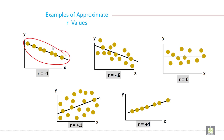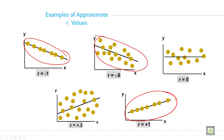Looking at approximate r values: if r is minus 1, all dots should be on the line going downward. If r is plus 1, all dots should be on the line going upward. If r is negative, it goes downward and the dots are far from the line. If r is positive, it goes upward and the dots are also far from the line. If r is 0, you cannot determine the relationship between the two variables.